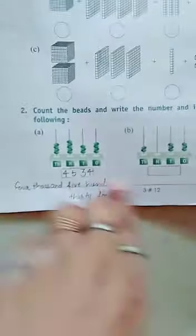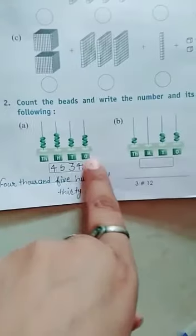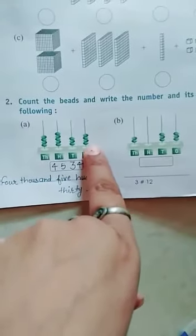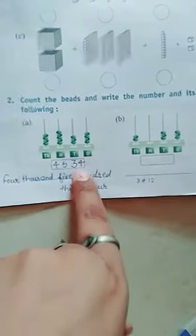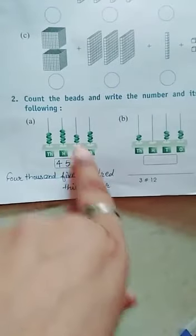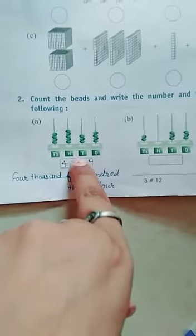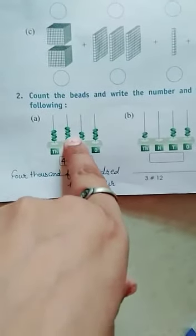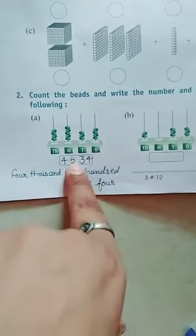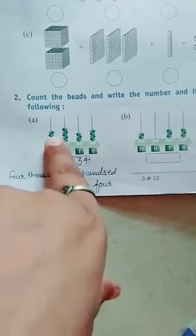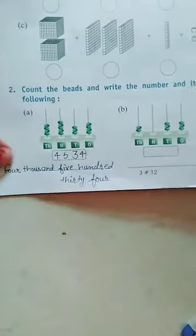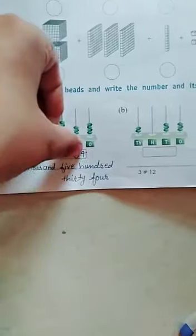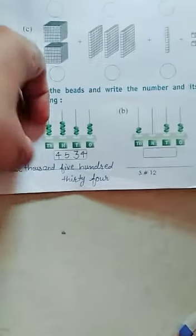And dear students, we count 1st place, our beads are 1, 2, 3 and 4. So we write 4 in 1st place. Then our beads in 10s place are 1, 2 and 3, so we mention 3. Then we have 1, 2, 3, 4 and 5, so we mention 5. Then 1, 2, 3 and 4, so we write 4. Now you write the number name: four thousand five hundred thirty-four.